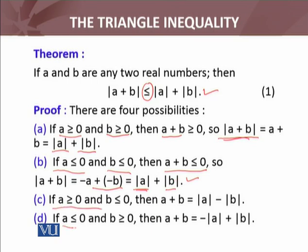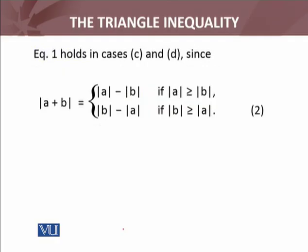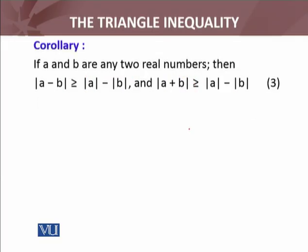The third case and fourth cases are: one of them is positive and one of them is negative. Then a plus b equals magnitude of a minus magnitude of b. Similarly, in cases c and d, equation one holds such that |a + b| equals this piecewise defined function. If a magnitude is greater than or equal to b, then what will be the answer? This will be always positive. Then we have less than or equal to the original triangle inequality satisfied. By this way, we have proved the triangle inequality.